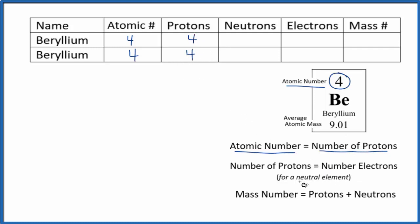If we're dealing with a neutral element, and all of the elements on the periodic table, they're neutral. So if you see Be, that's neutral. Be2+, that's an ion. It's not neutral. It has a charge.